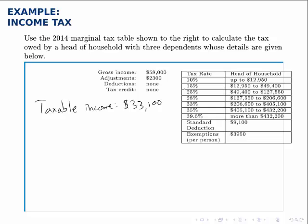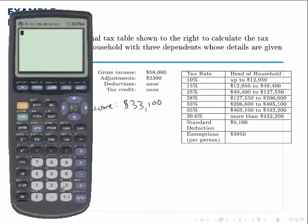With a taxable income of $33,100, this taxpayer ends up in the 15% bracket. They fill up the 10% bracket and the remainder is in the 15% bracket. The first $12,950 is taxed at 10%. The remaining money from $12,951 up through $33,100 gets taxed at 15%. To find the amount in that bracket we subtract $33,100 minus $12,950 and find that there's $20,150 in that second bracket.